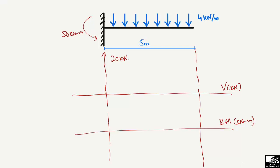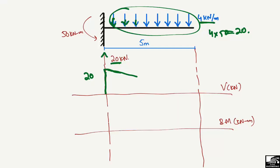For the shear force diagram: the reaction at the fixed support is 20 kilonewton acting upward, so we move in the upper direction by 20 kilonewton. Then there is a distributed load acting downward at 4 kilonewton per meter over 5 meters, giving 20 kilonewton downward. Since the upward force was +20 and the total downward force is also 20 kilonewton, we subtract to get zero at the free end.